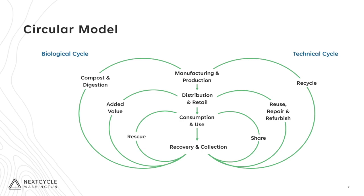The left side of the diagram is focused on organic materials, like food scraps and yard waste, while the right side is focused on items like pizza boxes, plastic takeout containers, cell phones, and other non-organic materials. The inner circles have higher value attached to them, as those processes are a better use for the materials.